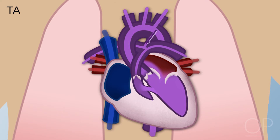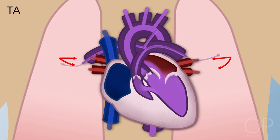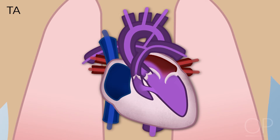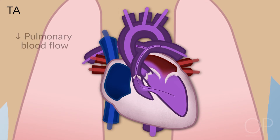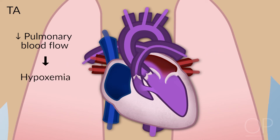Some blood goes through the ductus arteriosus out to the lungs, where it gets oxygenated and comes back again. In utero this is not a problem, and after birth it isn't a problem either. But when the ductus arteriosus starts closing, the amount of blood going to the lungs to get oxygen is reduced, and gradually the arterial saturation will decrease, resulting in more hypoxemia.